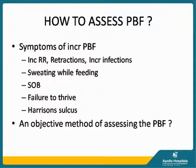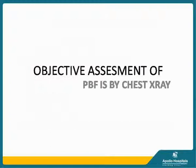Symptoms of increased pulmonary blood flow include increased respiration, retractions, increased infections, sweating while feeding, shortness of breath, failure to thrive, and Harrison's sulcus. The objective assessment of pulmonary blood flow to some extent is made by a chest X-ray, and these signs are extremely reliable.